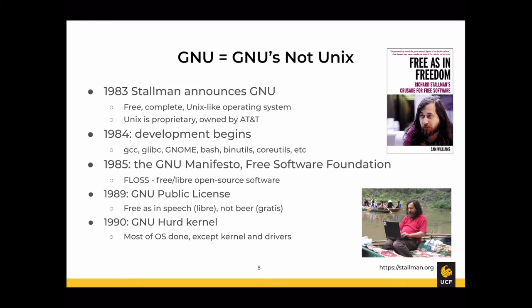The GPL was different from other open source licenses in that it not only allowed anyone to download and use software, even for commercial purposes, but required that anyone who made modifications and used it commercially had to release their modifications. Unlike more liberal licenses like MIT or BSD, the GPL actually requires you to keep software open source if you use it and release it.